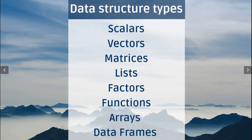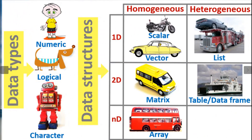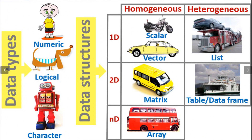In the last video you learned the basic data structures in R. Now let's see how data structures are classified. Data structures are classified either according to their dimensions — one dimension, two dimension, and multi-dimension — or they can be classified according to their structure types: homogeneous and heterogeneous data structure.